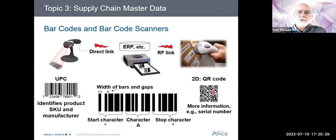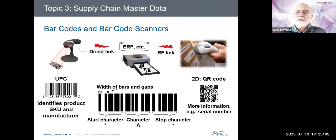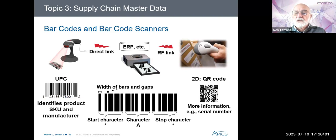Then we get 2D barcodes, what we commonly call QR codes, which are beginning to be used quite a bit everywhere. You can scan a QR code and get information. They use data in two dimensions rather than just one, allowing them to store more information. The three little boxes in the corners serve as the equivalent of start and stop characters, indicating which end is up. These codes can store serial numbers, information, websites, addresses, and many other things today.